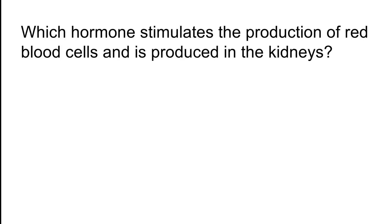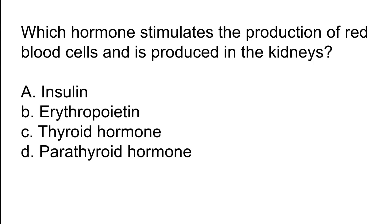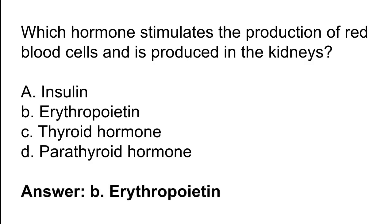Which hormone stimulates the production of red blood cells and is produced in the kidneys? Options: A) Insulin, B) Erythropoietin, C) Thyroid hormone, D) Parathyroid hormone. The correct answer is option B. Erythropoietin is the hormone that stimulates the production of red blood cells and is produced in the kidneys.